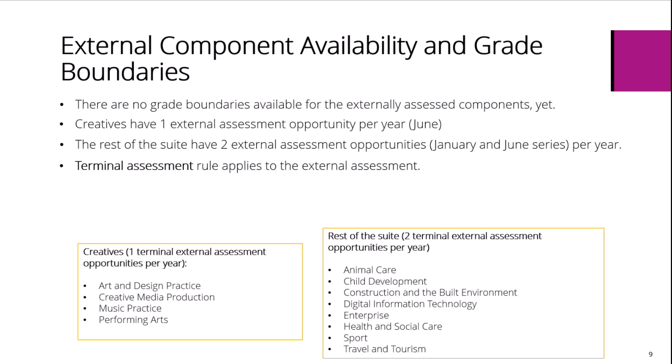There are no grade boundaries available for the external component yet, as grade boundaries are determined once awarding takes place for a particular series. The first series will be in January 2024 or June 2024, depending on the subject. Creative subjects have one external assessment opportunity per year in the June series, while the rest of the suite have two external assessment opportunities in January and June. Please also note that the terminal assessment rule applies to the external assessment.